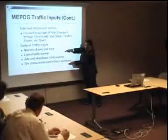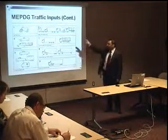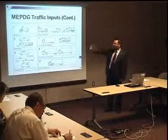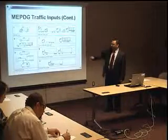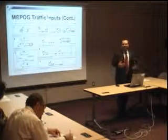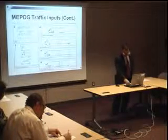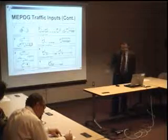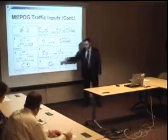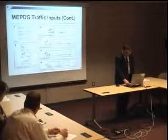The last three inputs — axle configuration, tire characteristics, and inflation pressure — cannot be obtained from traffic monitoring data, so we use the default inputs. Vehicle classes 1, 2, and 3 — motorcycle, passenger car, and pickup truck — are not considered to contribute to pavement damage. The focus is on vehicle classes 4 through 13: buses, single unit trucks, and classes 5 through 13 which include different truck types. The most common is the semi-trailer with single, tandem, and tandem axles — five axles classified as single, tandem, tandem.